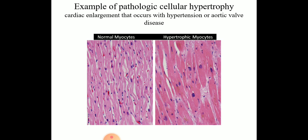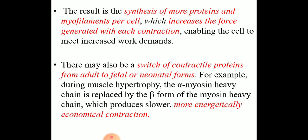This figure explains pathological cellular hypertrophy. You can see normal myocardial fiber compared to a hypertrophied myocyte, which shows increase in size of the myocyte as well as the nucleus. During hypertrophy, there is synthesis of more proteins and myofilaments per cell, which increases the force generated with each contraction. There may also be a switch of contractile protein from adult to fetal or neonatal form — for example, during muscle hypertrophy, alpha-myosin heavy chain is replaced by the beta form, which produces slower but more energetically economical contraction.